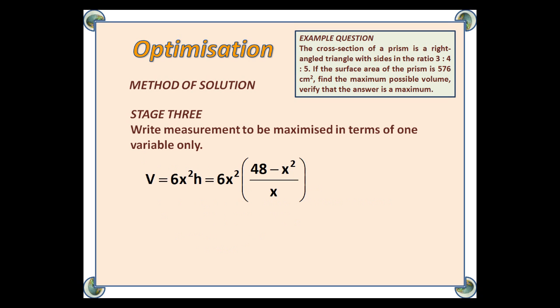Stage 3: Write the measurement to be maximized in terms of one variable only. So, we want to maximize the volume. At the moment, it says 6x²h. But if we rearrange the surface area equation, x² + xh = 48, to make h the subject, we take away the x² and divide by x, and then we can substitute for this in our volume formula.